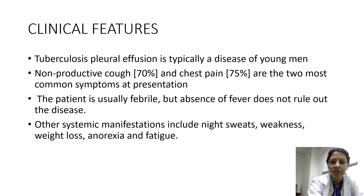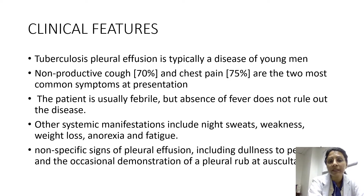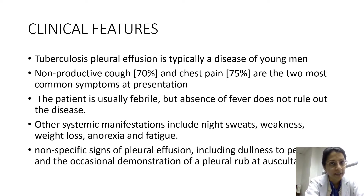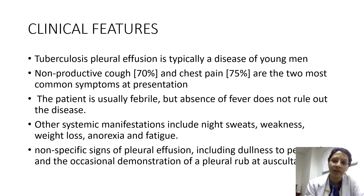Other systemic manifestations include night sweats, weakness, weight loss, anorexia, and fatigue — these are common to all forms of tuberculosis. Non-specific signs of pleural effusion include dullness to percussion and occasional demonstration of pleural rub at auscultation, with detailed findings assessed on inspection, palpation, percussion, and auscultation of the respiratory system.